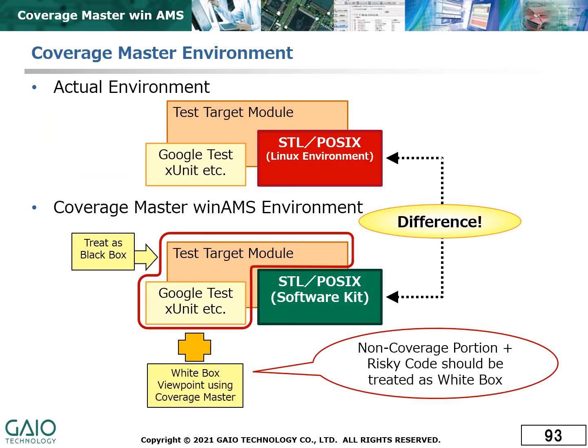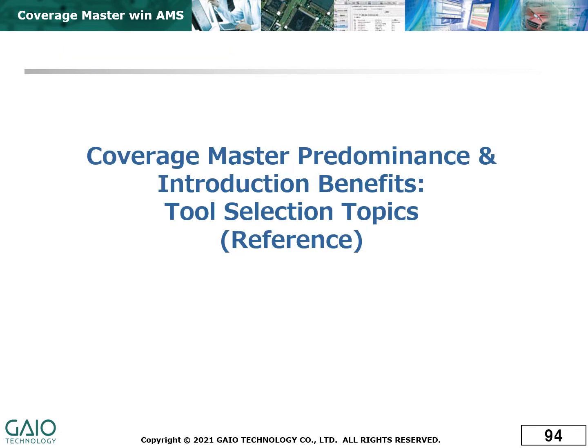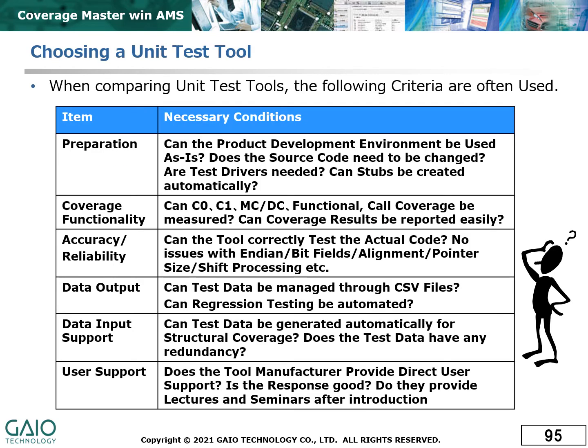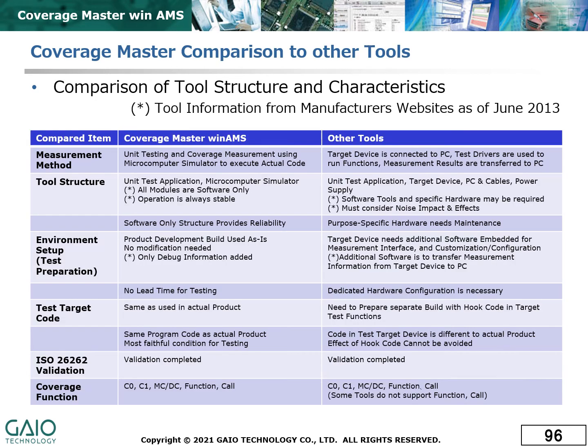This diagram shows how the test environment is changed by the addition of CoverageMaster WinAMS. The portion of the system enclosed by the red line can be tested using CoverageMaster WinAMS. The other portion, which cannot be tested as a black box, should be tested separately. CoverageMaster WinAMS can operate the test cases without the target hardware being present, meaning that tests can be administered remotely even before the target hardware is complete, with minimal maintenance and in a way that is the most faithful reproduction of the target object operation and that allows the full range of coverage to be measured.